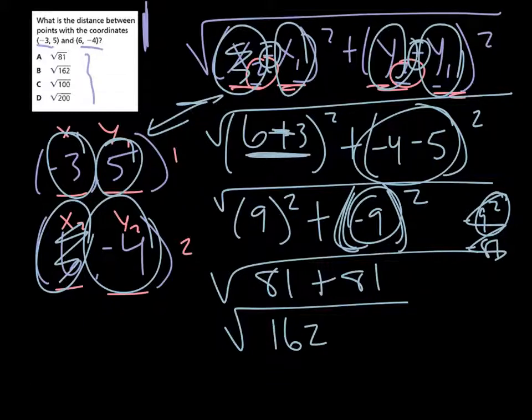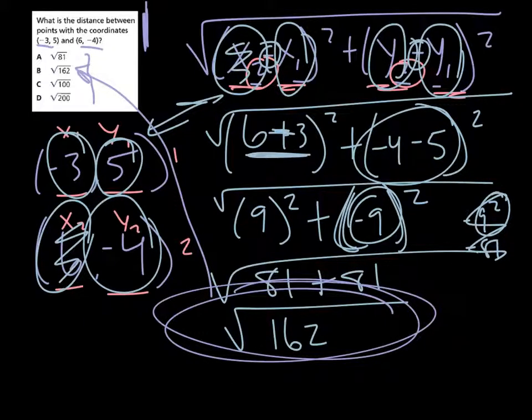And then that would be your final answer, which is B, √162. So if you got B from your best guess, you would have gotten that question correct if it was a multiple choice question. If you need to show your work, you might have gotten some points if you'd shown your work even if you got it wrong.